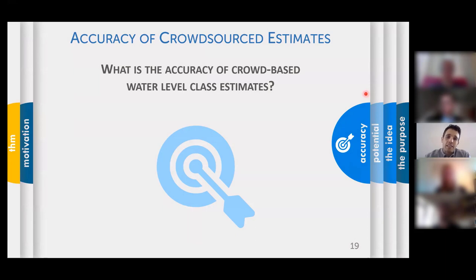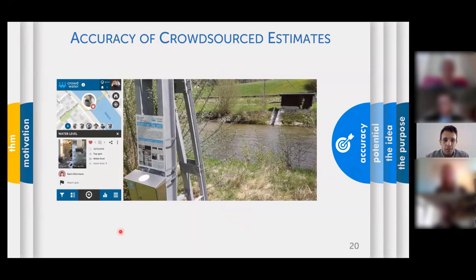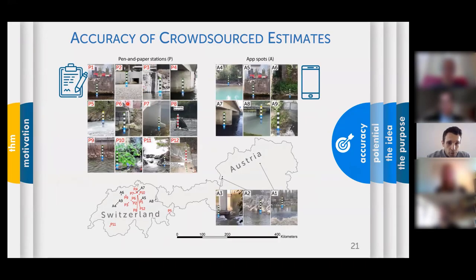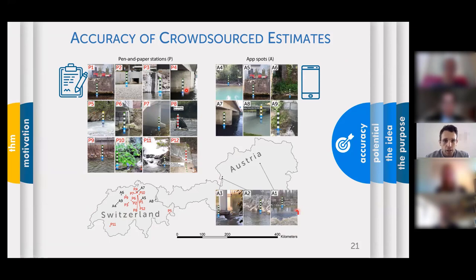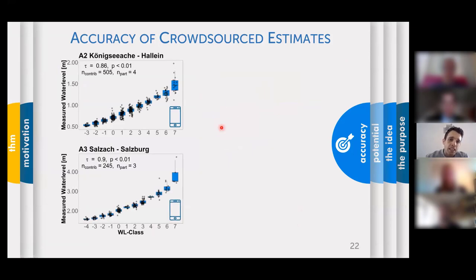How accurate are these crowd-based water level class estimates? In this study I looked at the accuracy of data from both the app and from letterboxes with forms placed on several Swiss rivers. We placed 12 letterboxes with forms at 12 locations across Switzerland, and also selected 9 locations from the app where actual citizen scientists had set up new stations — all in places where reference measurements were also available.